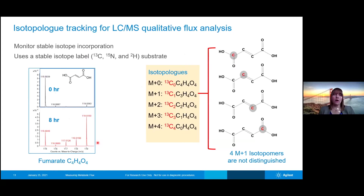To give a slightly deeper dive on the qualitative flux analysis, I wanted to go over isotopologue tracking. In our analyses, we're tracking isotopologues. Using an example of fumarate, which has four different carbons — if we incubate cells with carbon-13 labeled glucose, this will eventually get labeled into fumarate. The glucose goes through glycolysis, then into the mitochondria and into the TCA cycle, and fumarate is one of the metabolites in the TCA cycle. We can see in our mass spectrometry data the fumarate in the unlabeled case, and as each carbon-12 is converted into a carbon-13, we can start to see those mass peaks for each additional carbon added.